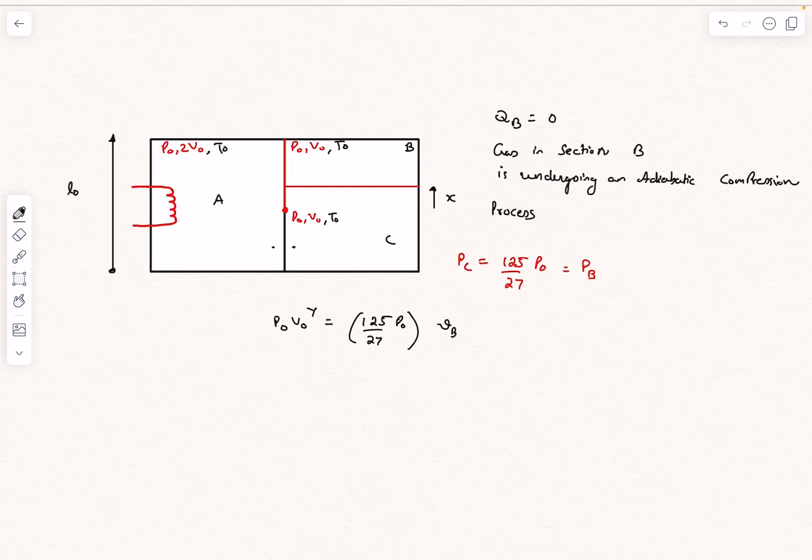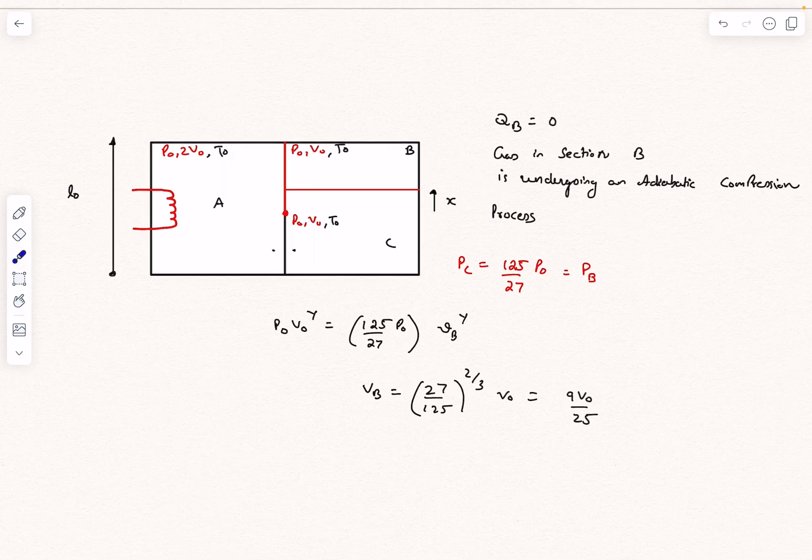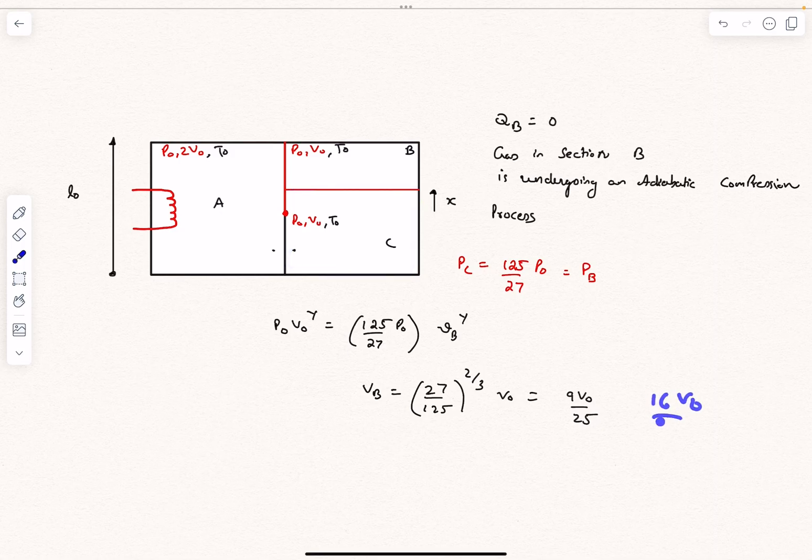From here we get VB. Now gamma is 1.5, so this comes out to be 9V₀ divided by 25. If you observe, initially the volume was V₀ and finally it is 9 by 25 V₀, so the volume of section C increased by a value of 16V₀ by 25.